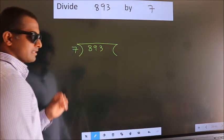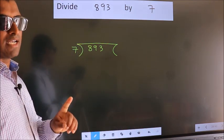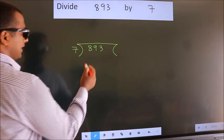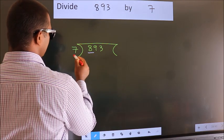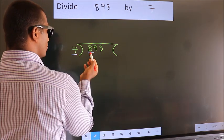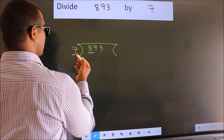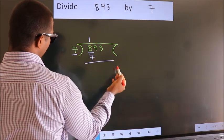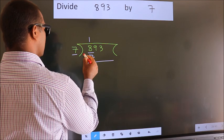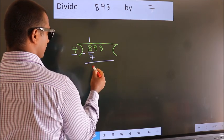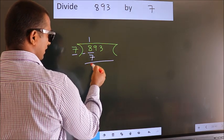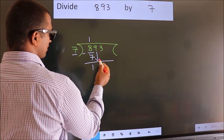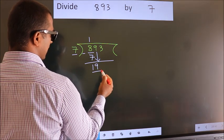This is your step 1. Here we have 8, here 7. A number close to 8 in the 7 times table is 7 ones 7. Now we should subtract. We get 1. After this, bring down the beside number. So 9 down. So 19.